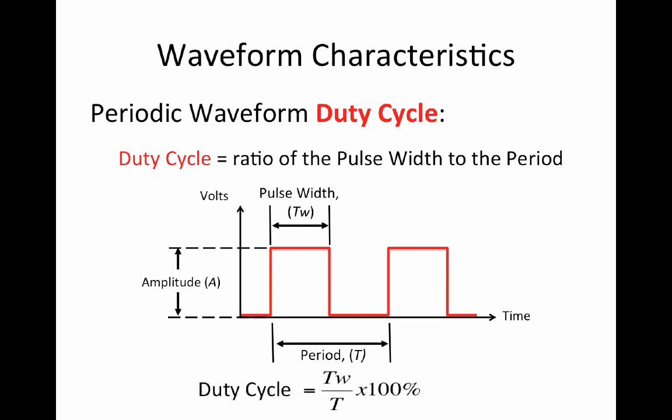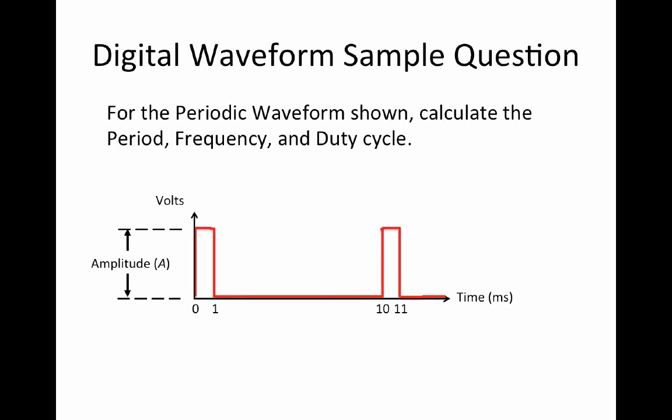Duty cycle is equal to the pulse width divided by the period multiplied by 100%. Let's look at a sample question involving a digital waveform. The waveform shown contains a portion of a periodic digital waveform.